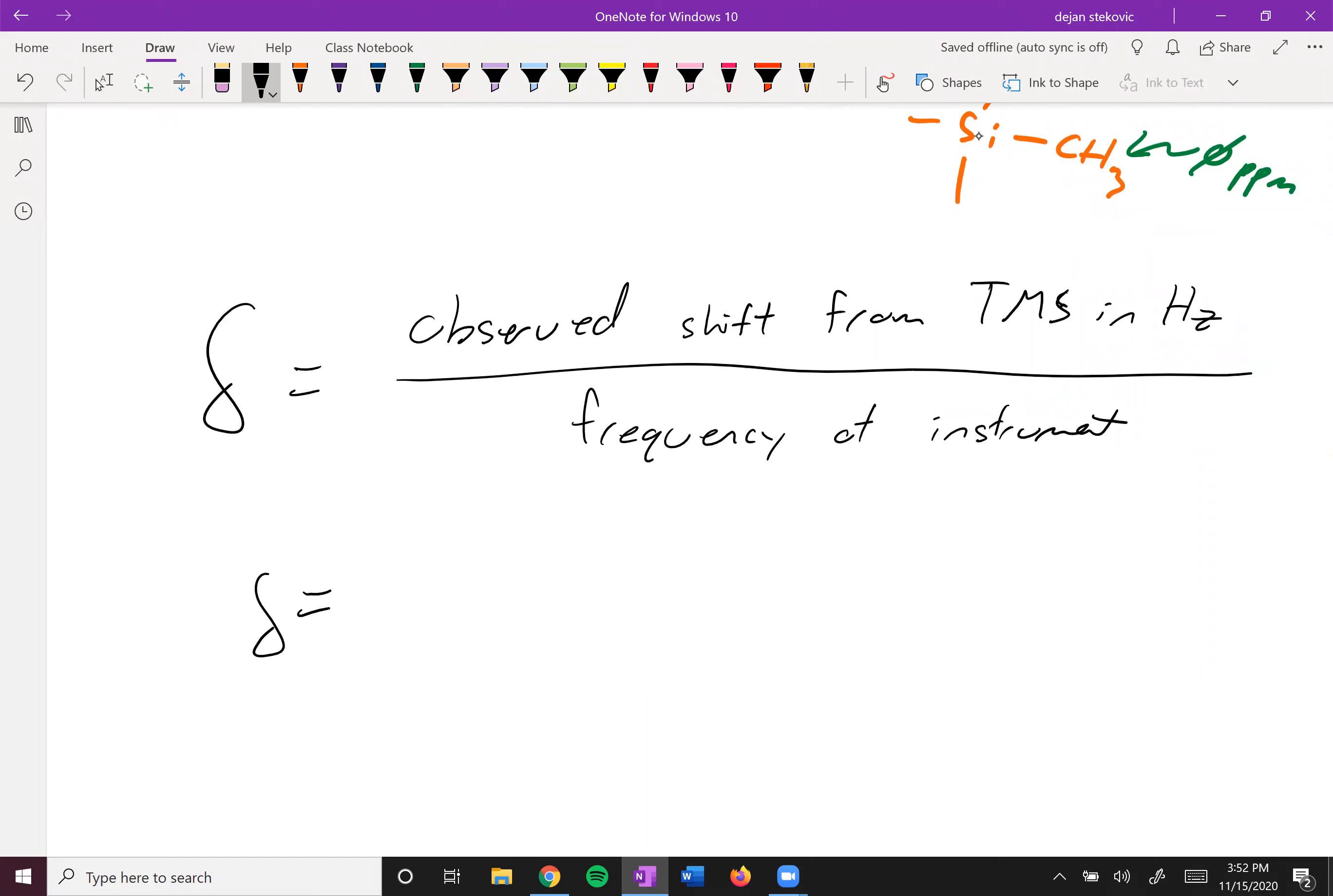So for example, if your signal is 2181 hertz away from TMS, you would just divide it by the megahertz of your instrument. In this case, maybe a 300 megahertz or 300 times 10 to the 6 hertz. You would then get 7.27 times 10 to the negative 6.